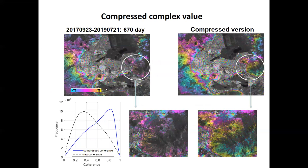Let's go to the real application with Sentinel-1 data in Mexico City. On the left, this is the traditional differential interferogram with a temporal baseline of 670 days. We use a small batch of 10 images and produce the compressed interferogram on the right. It is evident that the compressed interferogram is of superior quality and coherence compared to the raw one. The average coherence is increased from 0.4 to 0.8. This is mainly because the noise components are suppressed during data compression. Therefore, the artificial interferogram between small batches is less affected by noise and in general has a higher signal-to-noise ratio compared to the initial ones.